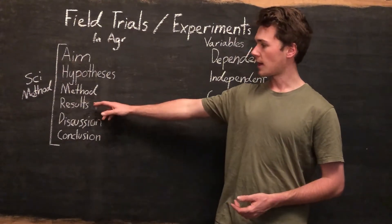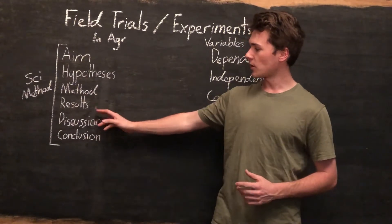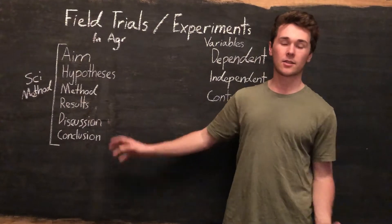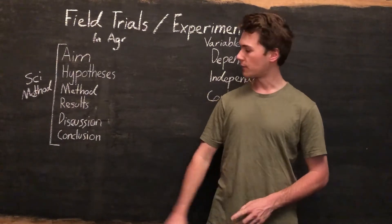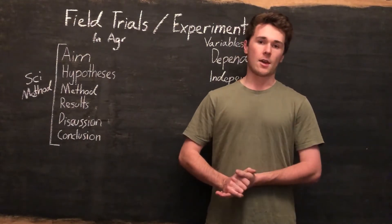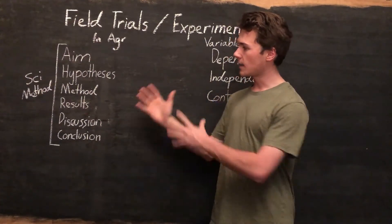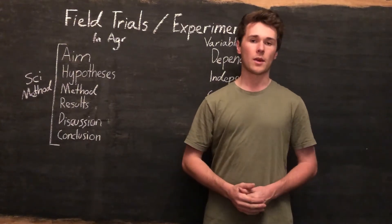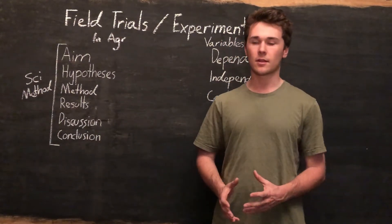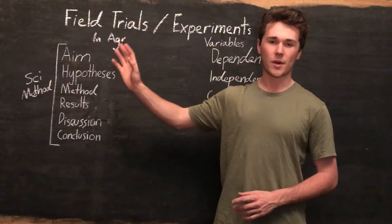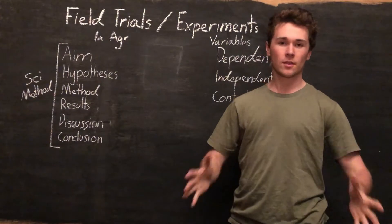Next we record our results. There's no point doing an experiment if you're not going to measure the effect or record anything. It's our results that we analyze in our discussion to see if we can identify some kind of effect — that's really what we're after. Finally, we include it all in a conclusion, which recaps the overall findings and ties back to the aim. The thought process doesn't have to be complex — you can just have one paddock, spray one side with a fertilizer and leave the other as a control.